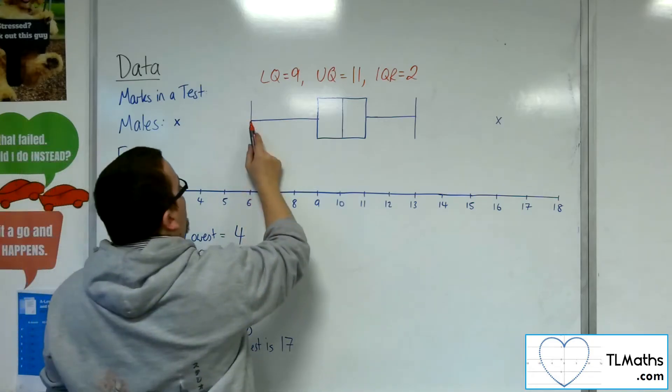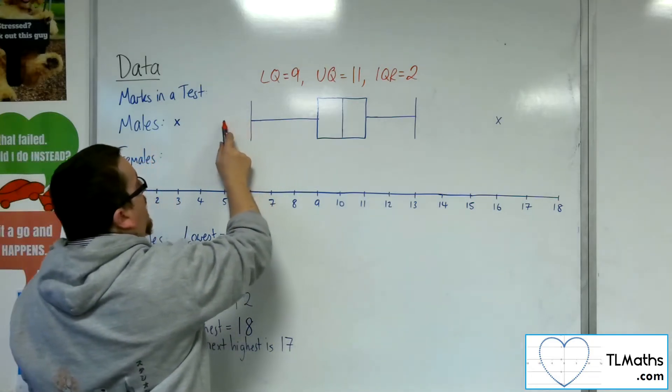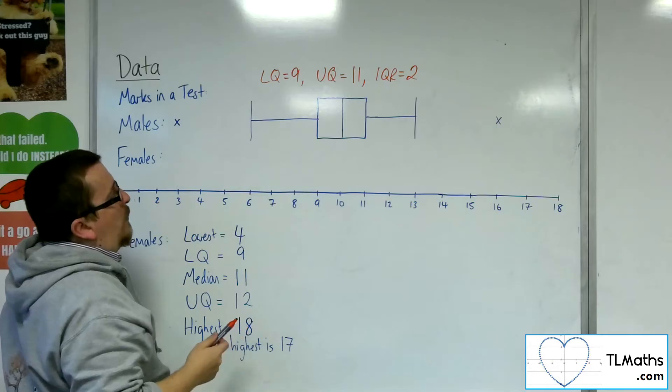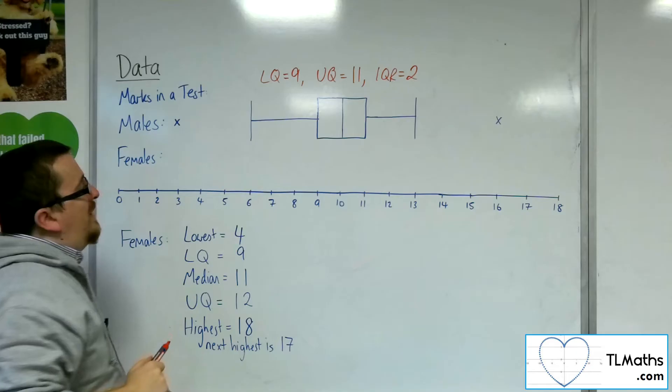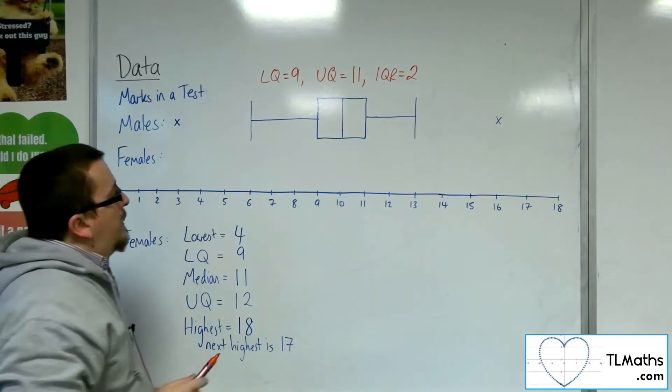Now if there were any data points that were less than 6, they would have appeared as outliers, as crosses. Here was one of them. Well, here is the one that was less than the 6.